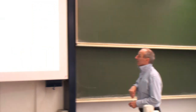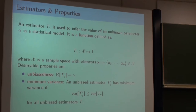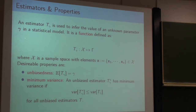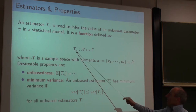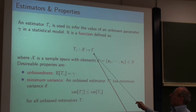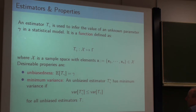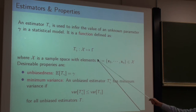So now we first talk a little bit about estimators and their properties. We talk about an estimator T_gamma, which is used to estimate some unknown parameter gamma. We may want to estimate the expected value, the variance, or some other quantity. The estimator is a function that maps our sample X from the sample space onto the parameter space. One particular sample is a set of data points X1 through Xn.